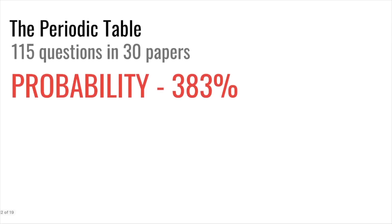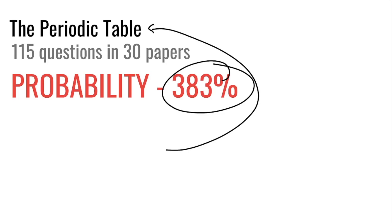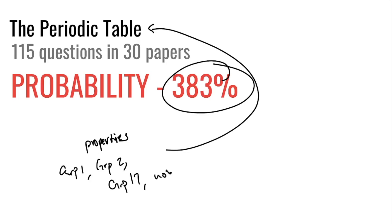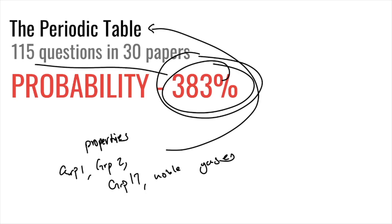The periodic table has a 383% probability — almost four questions per paper. It's a big topic covering properties of metals and non-metals (melting/boiling point, conductivity, density, appearance), and specific group properties: Group 1, Group 2, Group 17 (halogens), and noble gases. You could be asked about equations and properties of any of these groups.